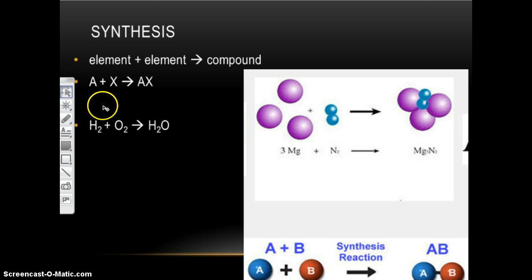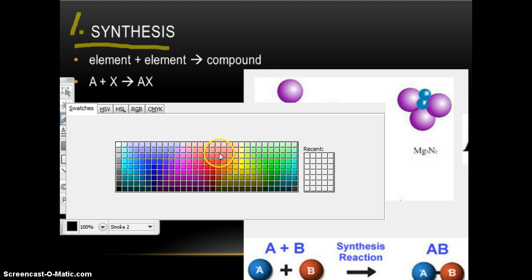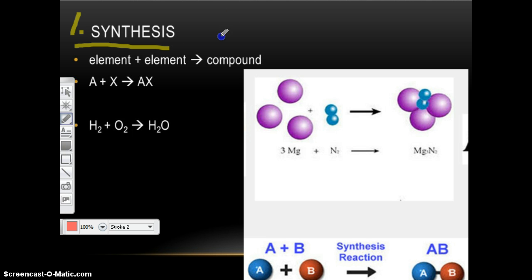So the first one is called a synthesis reaction. So this is type number one, synthesis. Write that on your paper. Then write element plus element yields compound. So this arrow, when we're in chemistry class, we don't say arrow, we don't say equals. We say the name for it, which is yield.